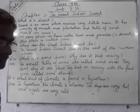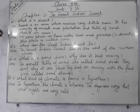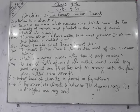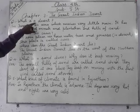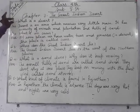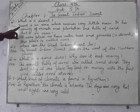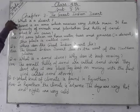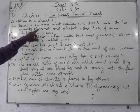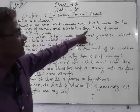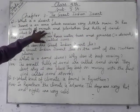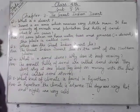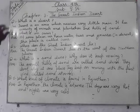There are some questions. First of all, what is a desert? Answer: A desert is an area which receives very little rain. There is a scarcity of animals and plantations, and hills of sand. That is called a desert.